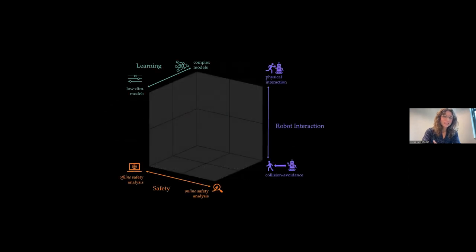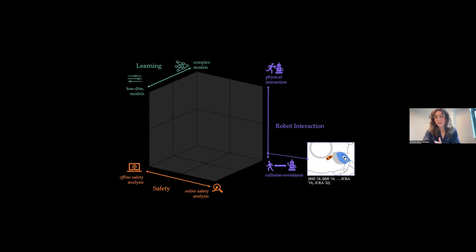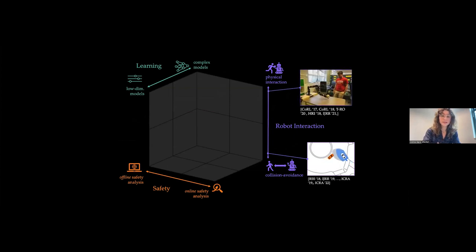I like to break down the space of research challenges into three principal axes. First, there's this whole spectrum of robot interaction, from collision avoidance all the way up to physical interaction with a human.